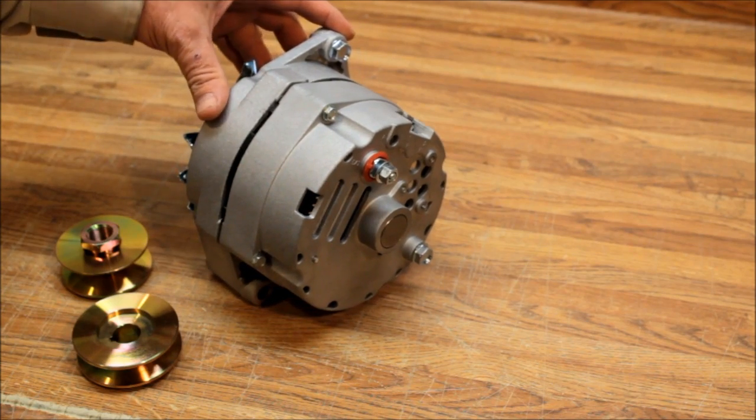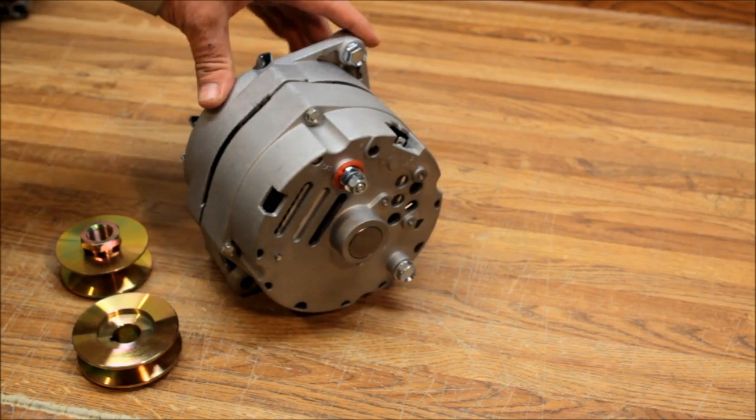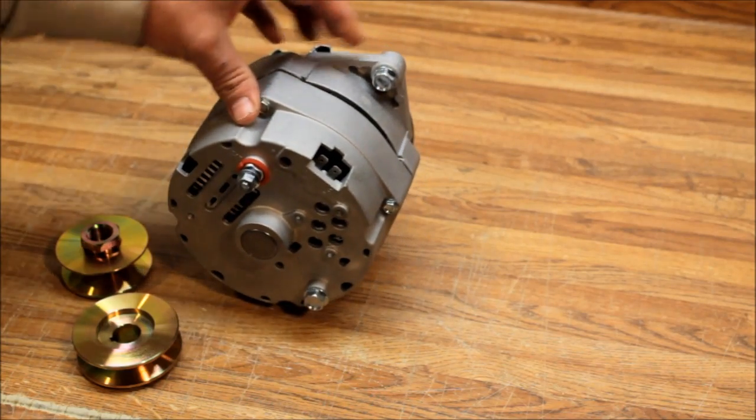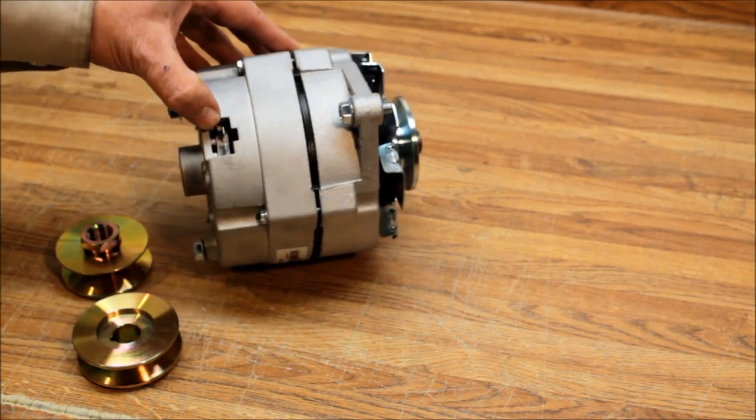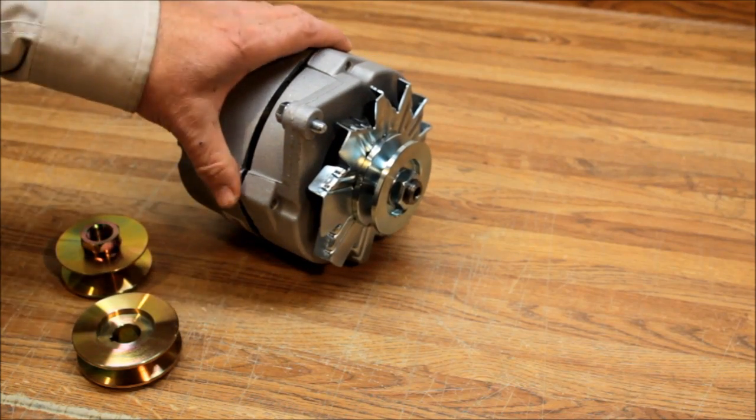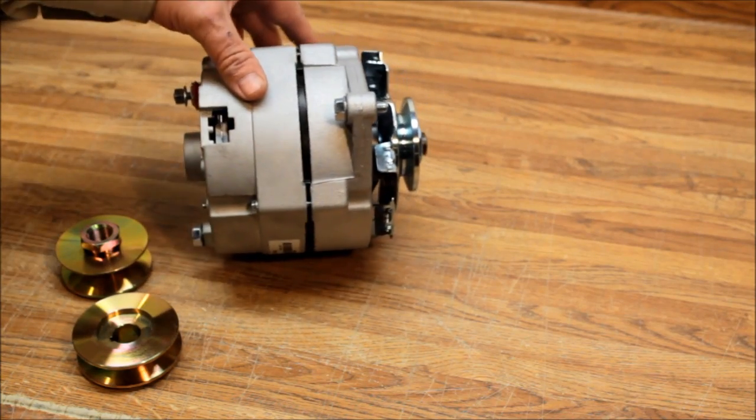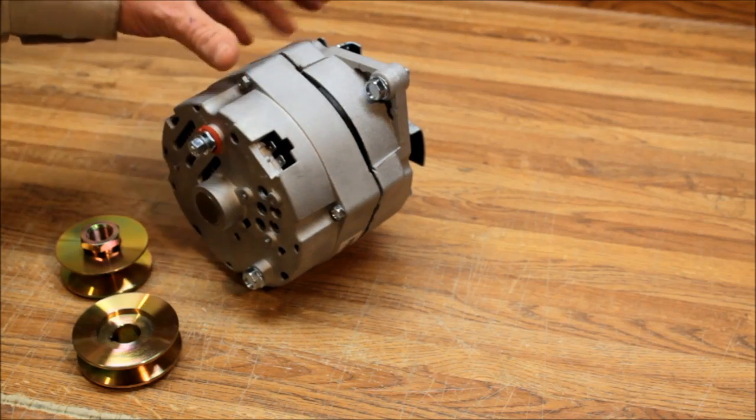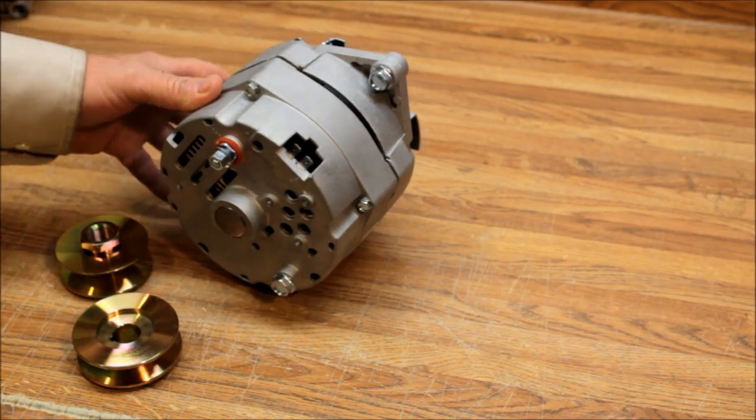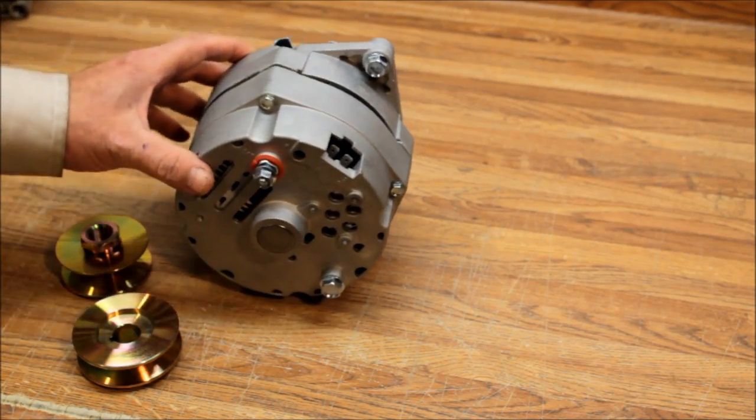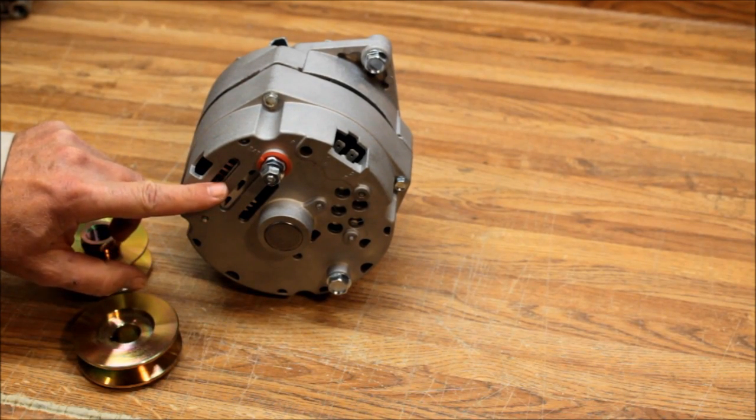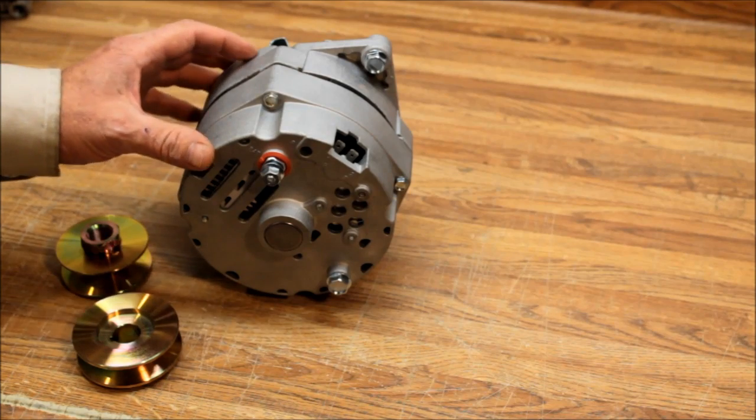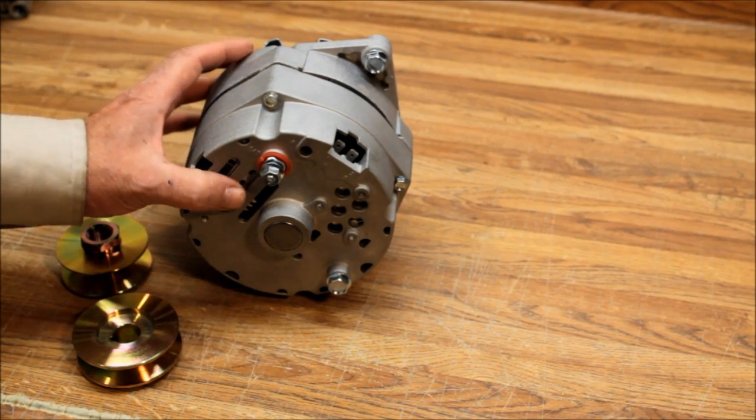The Corvette used the 10si series all the way up until the late 70s when it was replaced by the 12si series. The only difference between the 10si and 12si—they're the same physical size—is they opened up the back of the alternator here where the vent holes for the bridge rectifier are. They put a beefier stator, a beefier rotor in it, a beefier bridge rectifier and a better cooling fan, so then they upped the amperage.